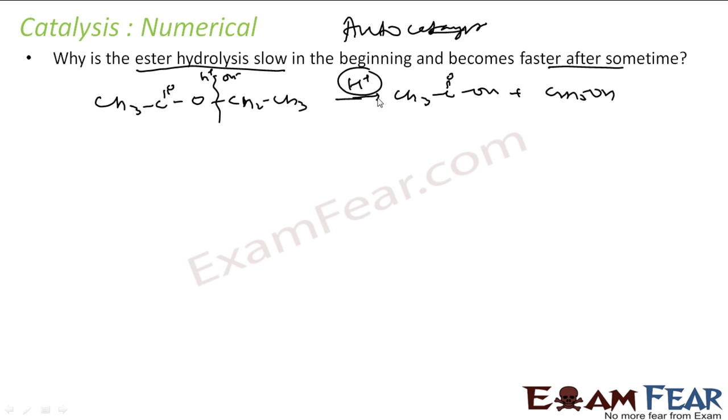This is acid. As the reaction proceeds, you get more and more acid, and more acid means more catalyst. Since you're adding more catalyst, the reaction becomes faster. This is an autocatalyst example where the product itself is a catalyst, so as the reaction proceeds forward, you get more catalyst and the reaction becomes faster.